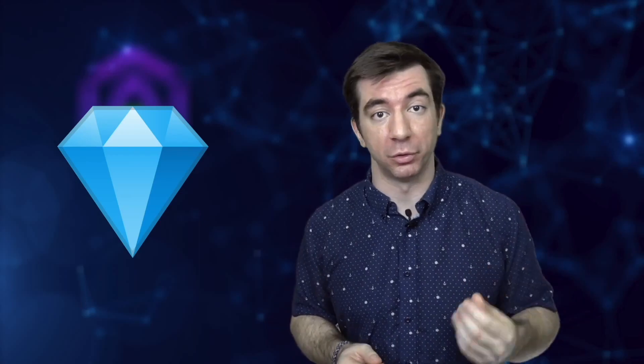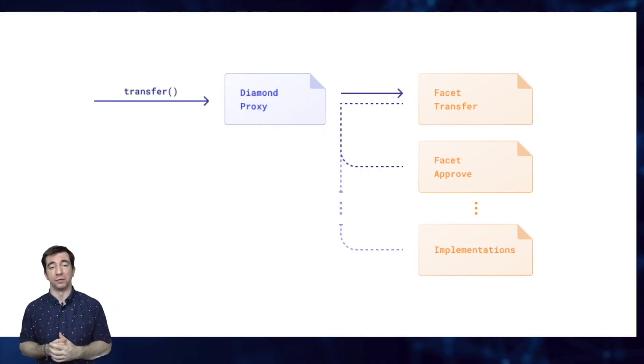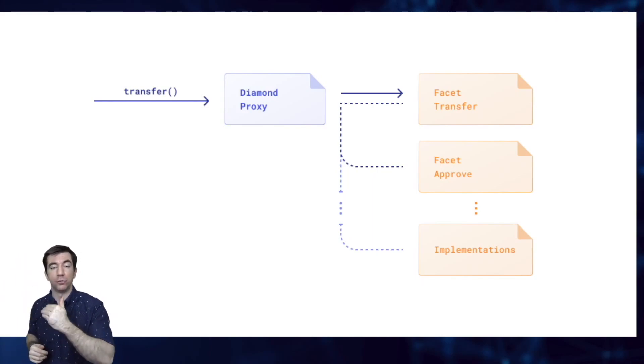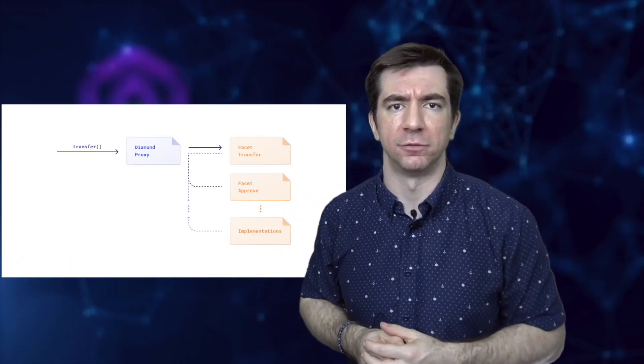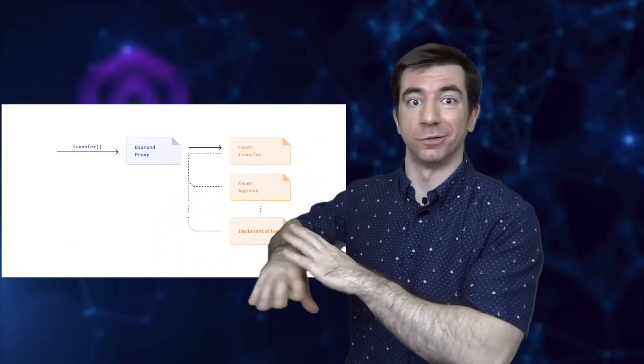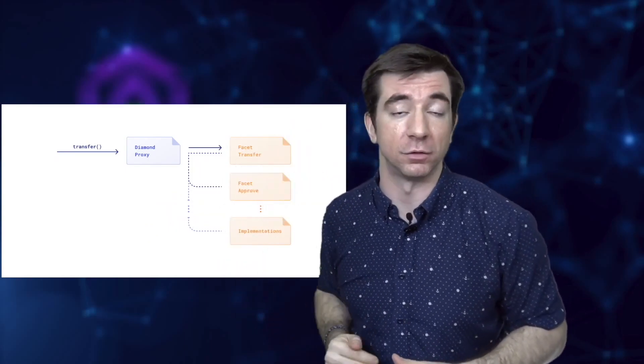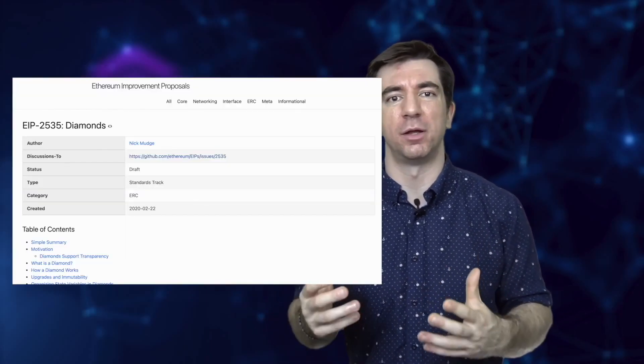The last pattern is the diamond pattern, which allows for multiple implementation contracts. This addresses issues like a contract being too large to fit the one-contract maximum size — you can split across multiple contracts. It also allows more granular upgrades, so you don't have to redeploy your entire smart contract; you can upgrade just little pieces of it. All the proxies mentioned have some type of Ethereum Improvement Proposal, most still in draft phase.